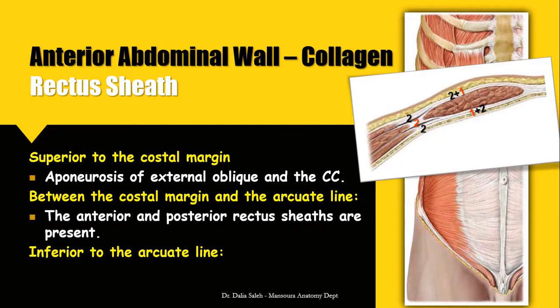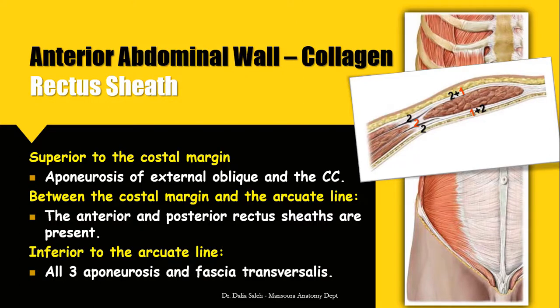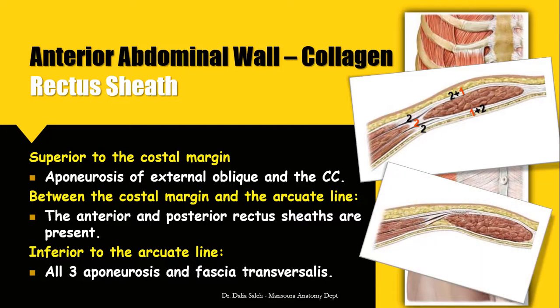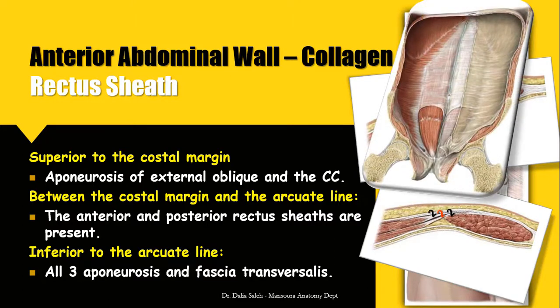Inferior to the level of the arcuate line, all three aponeuroses of the external oblique, internal oblique, and transversus abdominis pass in front of the rectus abdominis and form its anterior wall, while the posterior wall of the rectus sheath is formed by the fascia transversalis alone. In this cross-section, the bilaminar aponeuroses of all three muscles pass in front of the rectus abdominis to form its anterior wall, while the posterior wall is made only of the fascia transversalis below the level of the arcuate line.